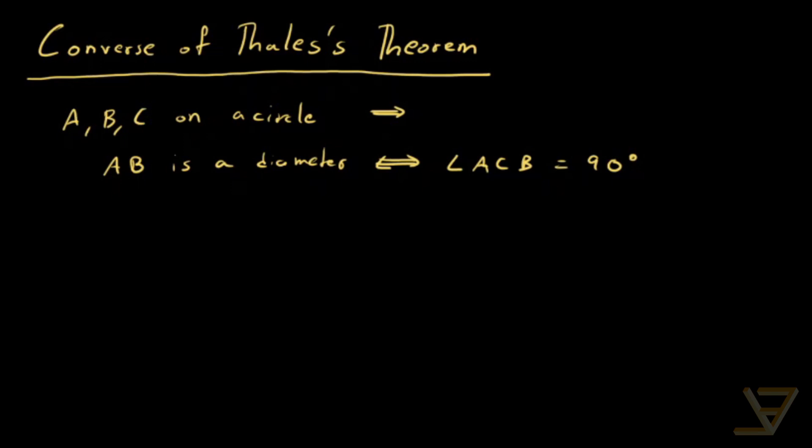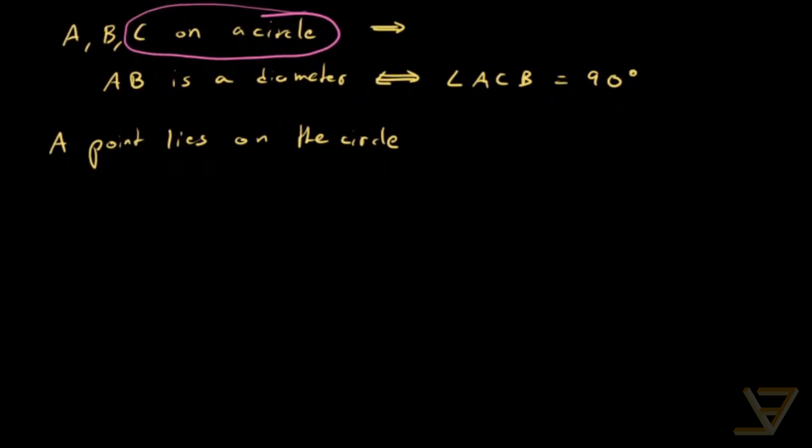But what if we want to show that a point lies on the circle? Essentially we want to establish some part of this where the third point is on the circle. So the converse of Thales' theorem, which is sort of a partial converse, is going to have to deal with that where we establish that a point is on a circle. So let me state it for you.